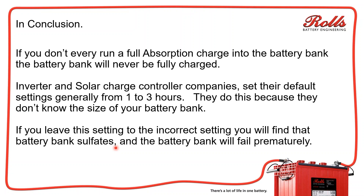On AGM batteries, it's incredibly important to make sure your absorption timers are set correctly because there's no way to check specific gravities. You can do load testing, but there's no real way to know offhand unless you do a load test periodically to check actual capacity — and that can be expensive and time consuming. The other problem with AGM batteries is if you leave a bad setting in the system for six, ten, or twelve months, the likelihood of recovering an AGM battery is much less than recovering a flooded battery. Generally, charge controller and inverter companies default settings to one to three hours because they don't know what size battery bank you're going to put in the system — but they also say you need to check with your battery manufacturer on what the setting truly needs to be.